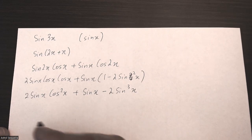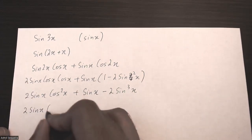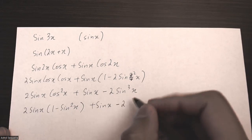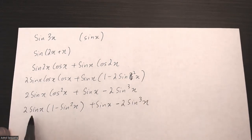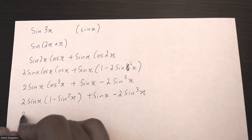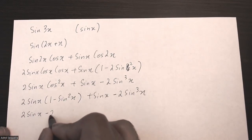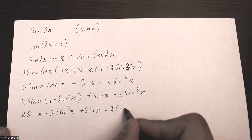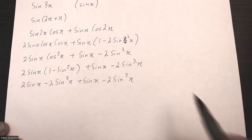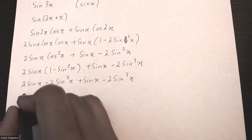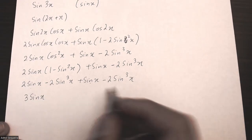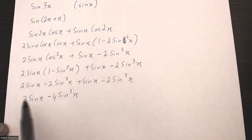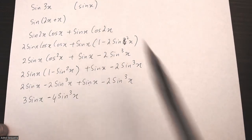I can convert cos squared x into 1 minus sine squared x using my trig identity, and I can multiply this into this bracket. Finally, I'm going to combine like terms. So 2 sine x plus sine x is 3 sine x, and negative 2 minus 2 is negative 4 sine cubed x. And this is my final solution for sine 3x in terms of sine x.